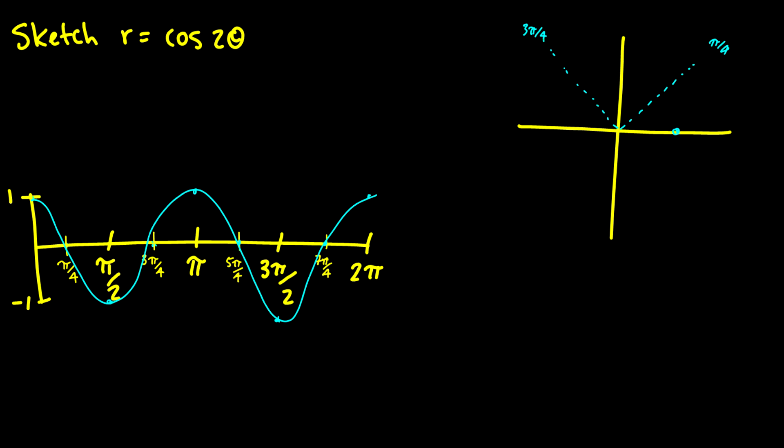Let's start at 0. So we're going to have a distance of 1. As we move to pi over 4 it is going to get closer and closer to 0 until we reach this point.